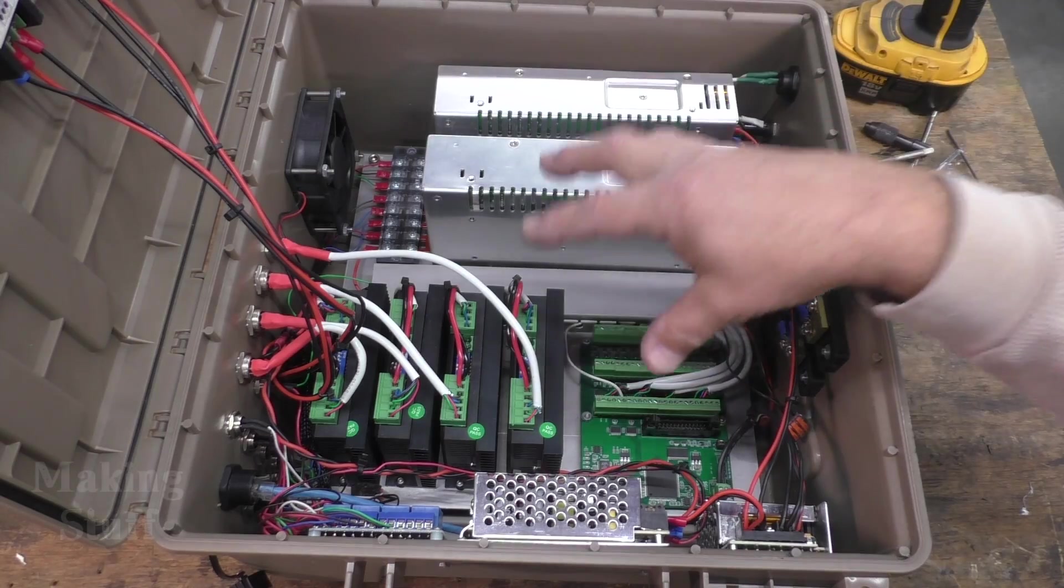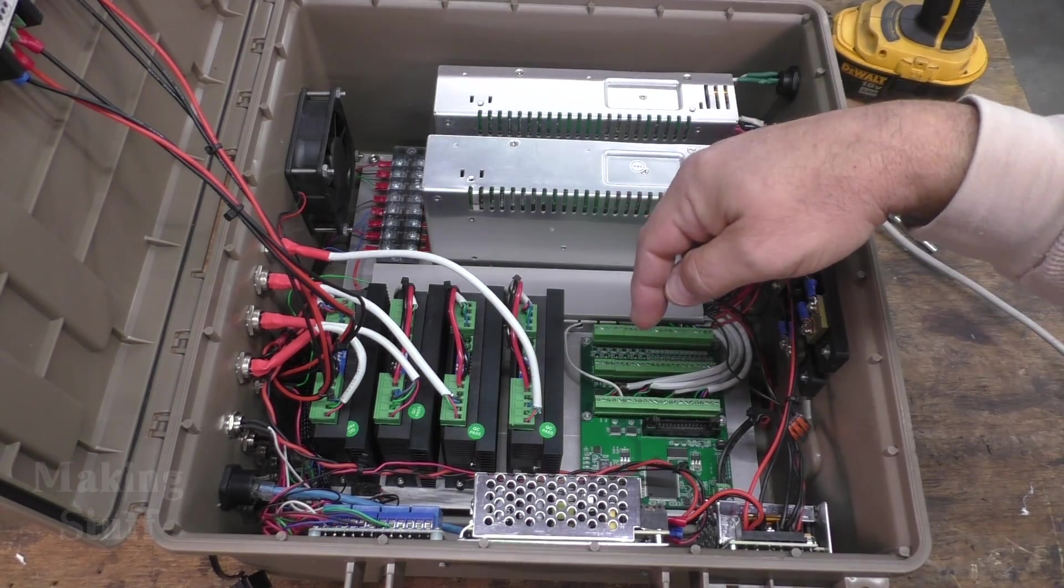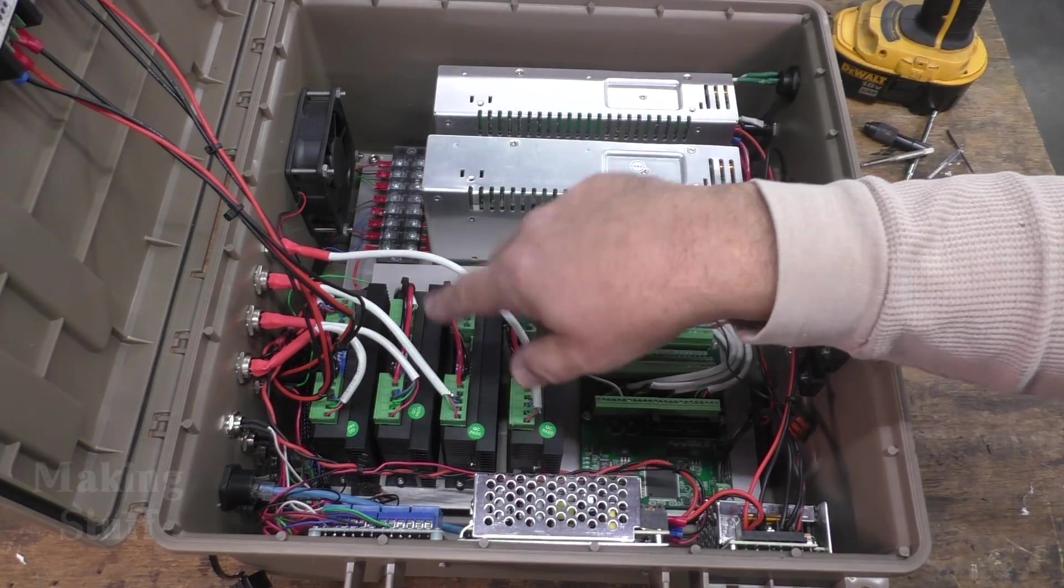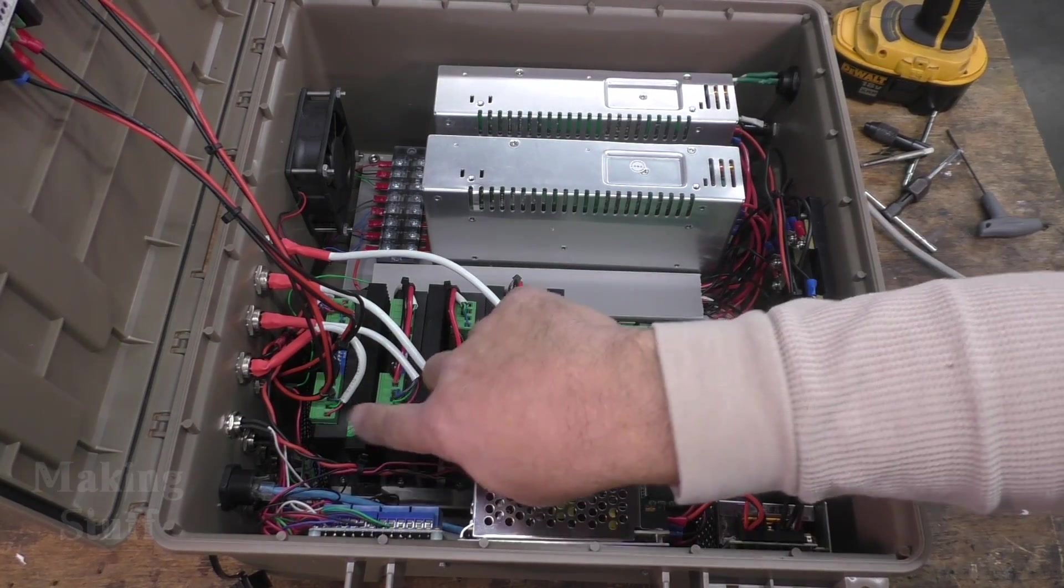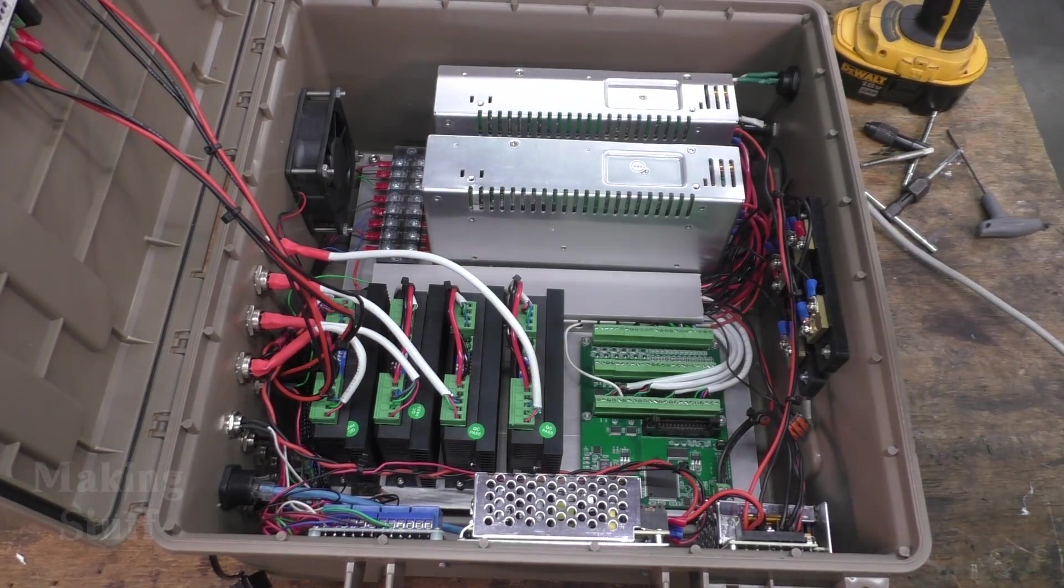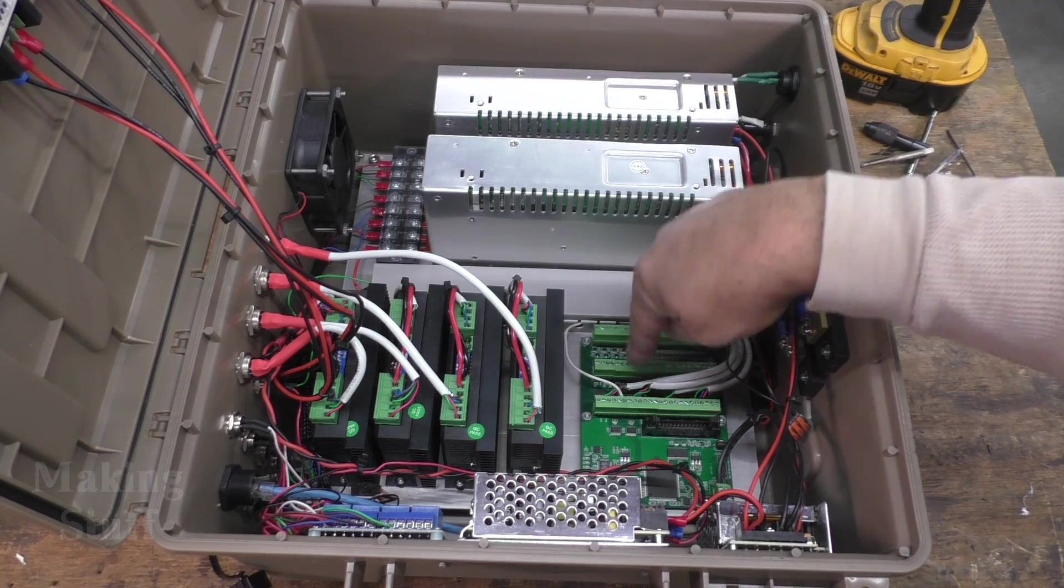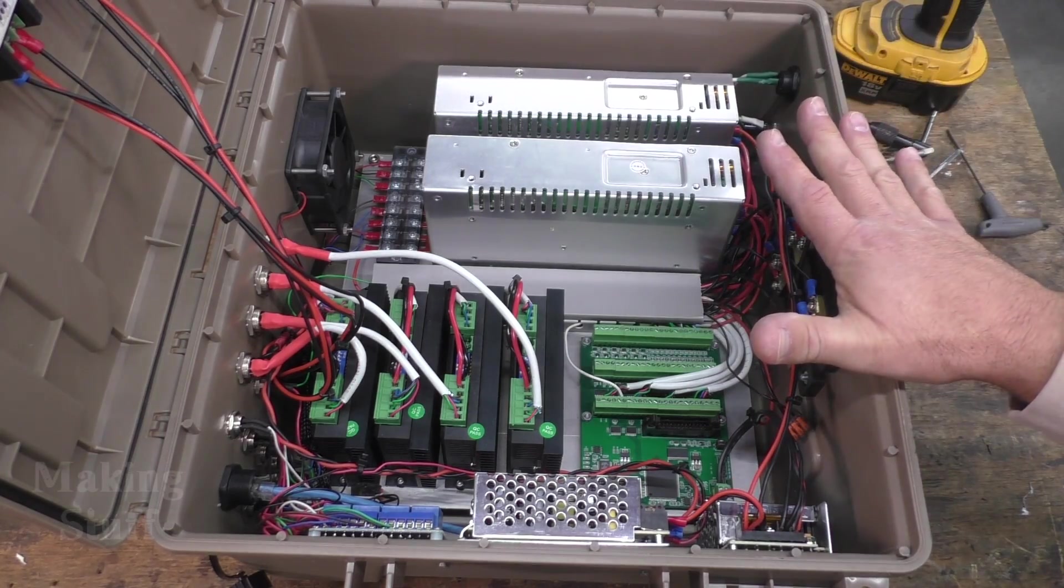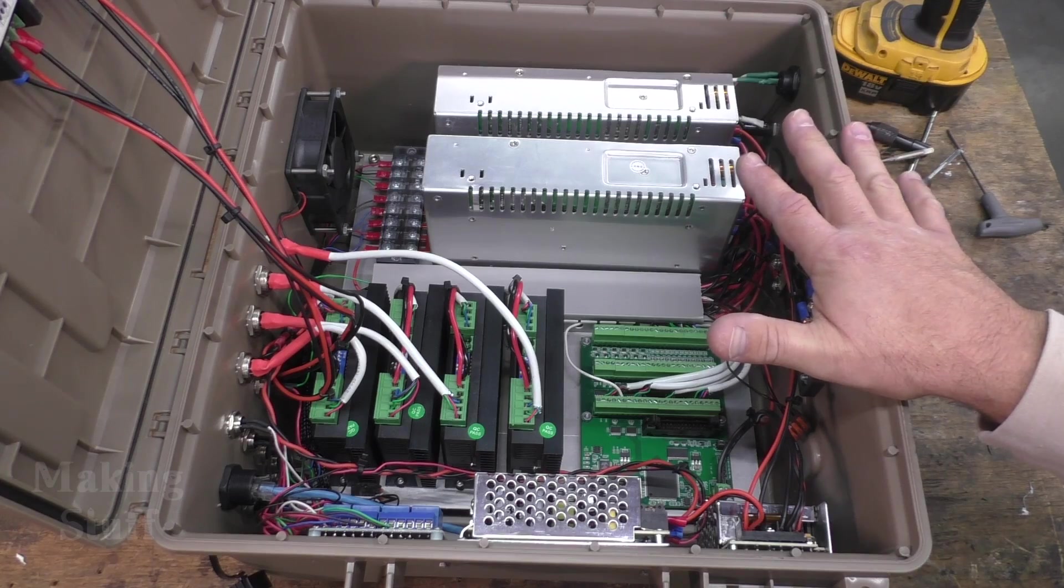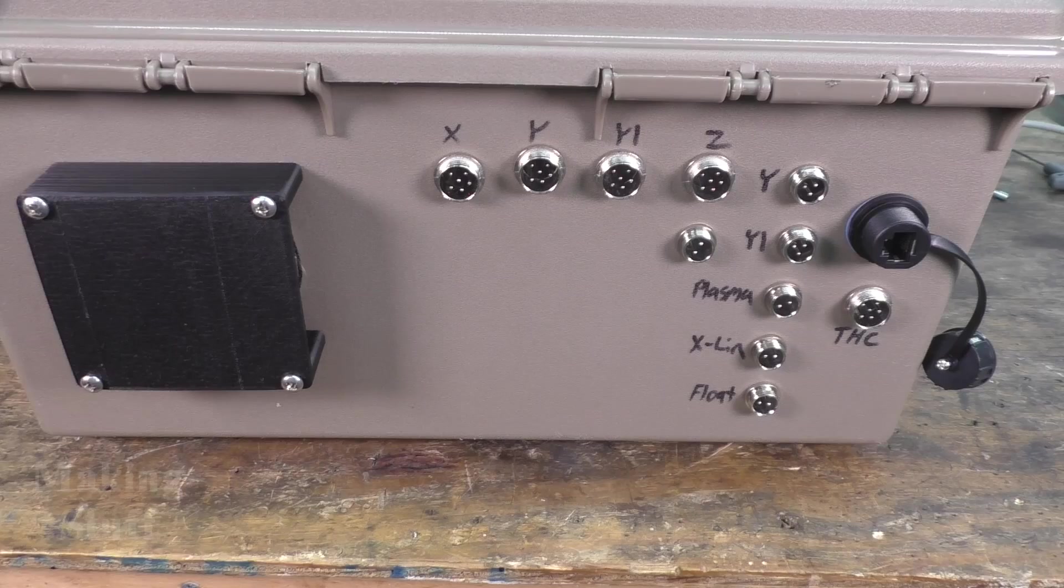The power supply also supplies power to my torch height controller, so this power supply has a dual purpose. Now I've also mounted the relay board, the other power supply, and I've got all of the little connections made down here. All of the aviation connectors have been wired up and they're wired into the 7i96 board. So this is complete and ready to hook up to the machine.